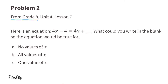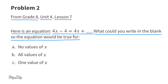Problem number 2 from 8th grade, Unit 4, Lesson 7. Here's an equation: 4x minus 4 equals 4x plus what number? What could you write in the blank so the equation would be true for part A, no values of x? Let's come back to this one later.